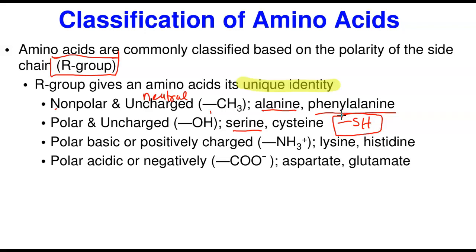The third group is the polar basic, also called positively charged amino acids. They are basic in nature because they have a side chain amino group that can gain an extra proton and become positively charged. When nitrogen gains an extra proton and has four bonds, it becomes positive. Examples are lysine and histidine.